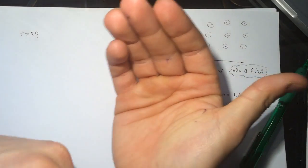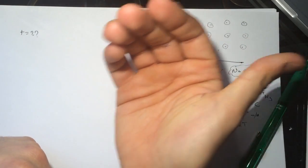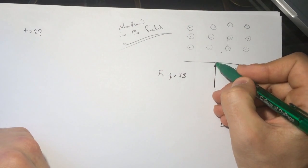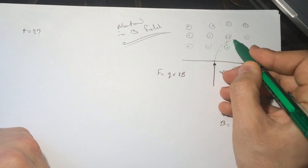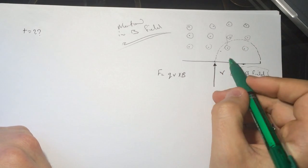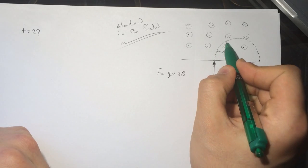...and your thumb will be pointing at the magnetic force. So as it keeps going up, it's going to go in a circle motion and then go down and go back. Here's the force here.